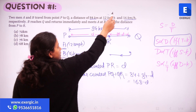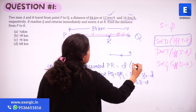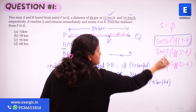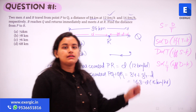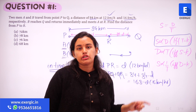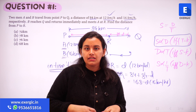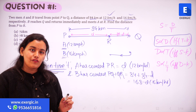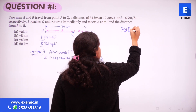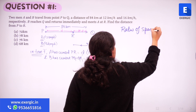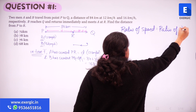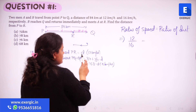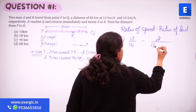The speeds are 12 km/h for A and 16 km/h for B. Since time is constant, the ratio of speeds equals the ratio of distances covered. So speed of A to speed of B equals 12 to 16, and this equals D to (168 minus D).